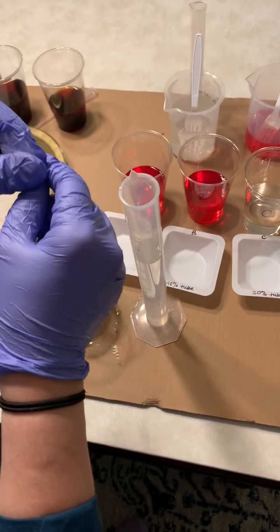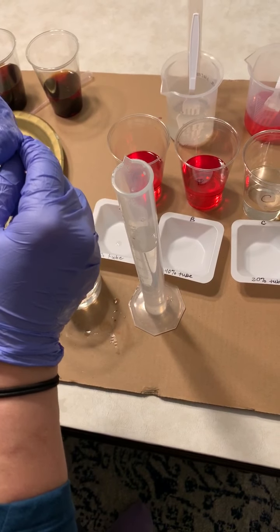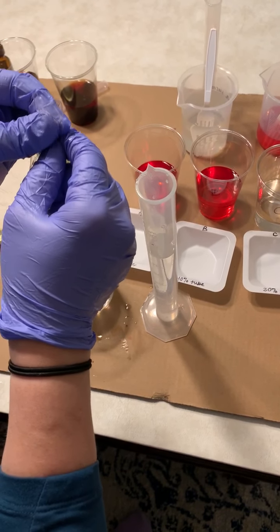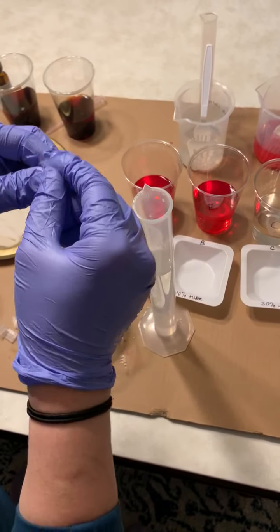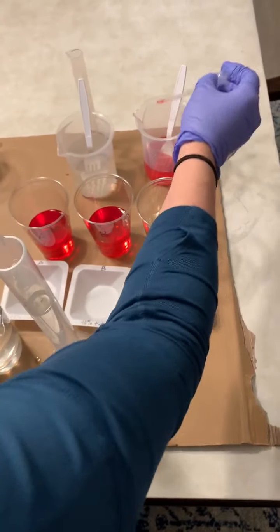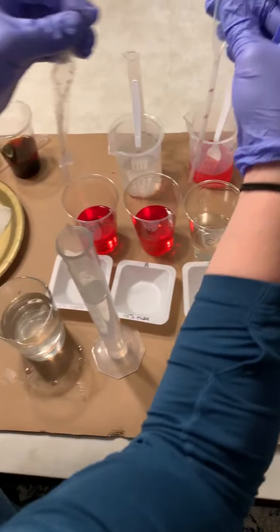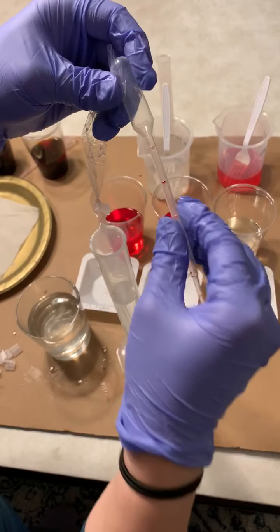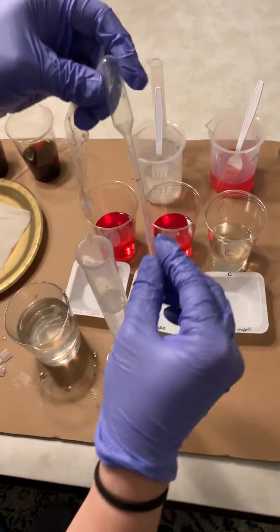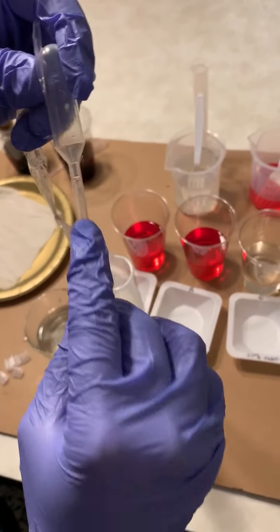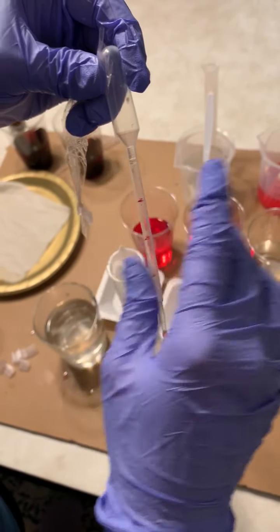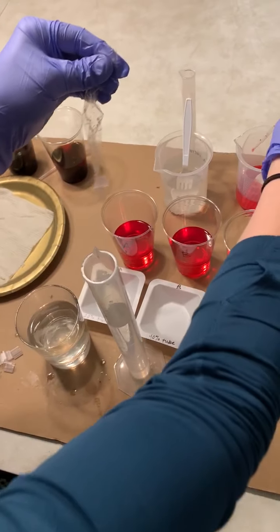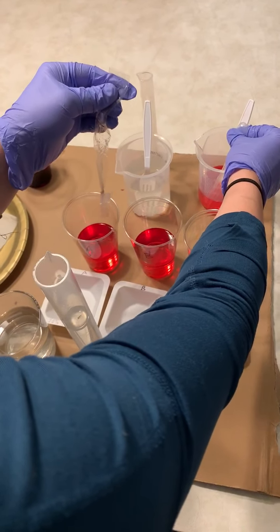So now we have to put 10 milliliters of the 20% sucrose solution inside my tube. So they suggest using a graduated cylinder. I actually suggest using the transfer pipette. So this one was used in my 20%, so I'm just going to use it again. As you can see, the top line is one milliliter, so I'm just going to fill it 10 times with this pipette into my tube.